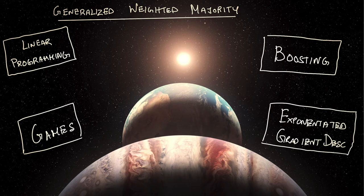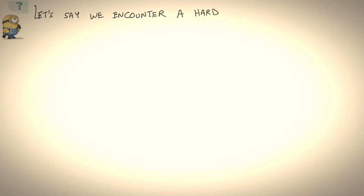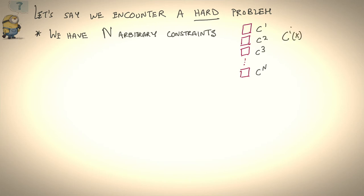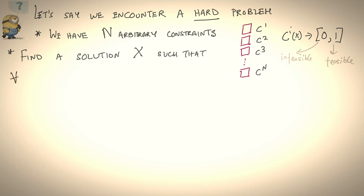GWM is a really pretty algorithm. If it were only good for solving prediction with expert advice, the story would end here. Interestingly, the reach of GWM is far more universal. Time and time again in the history of computer science, machine learning, and optimization, it's shown up in different forms — as an effective way to solve large-scale linear programming, to revolutionize machine learning in the form of boosting, to solve min-max games, and as exponential gradient descent.